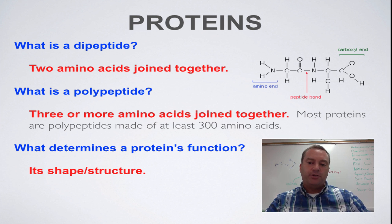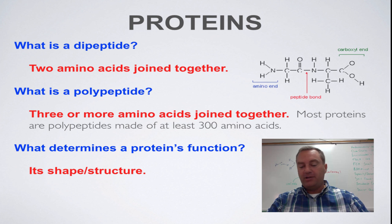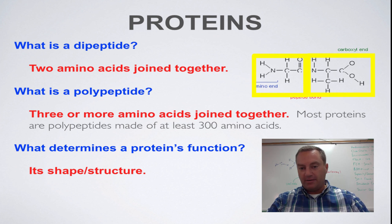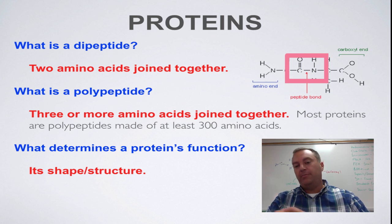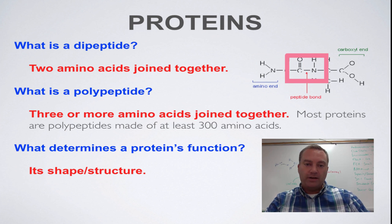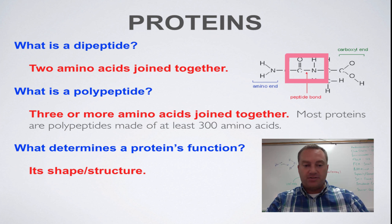Look over here on this picture on the right. As you can see here, this is a dipeptide — you have two amino acids joined together, and they're joined together by the peptide bond. That peptide bond represents the stored energy that was created during dehydration synthesis.